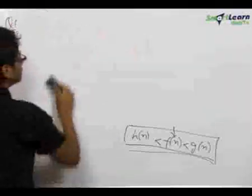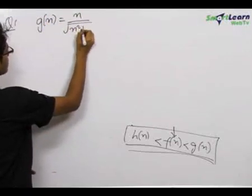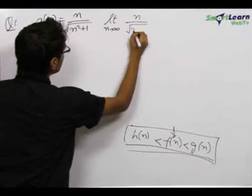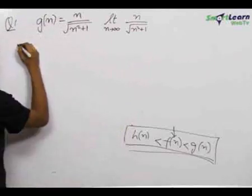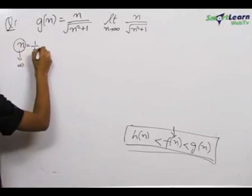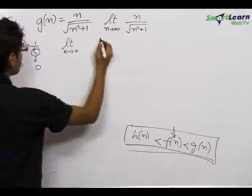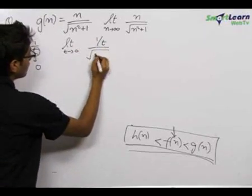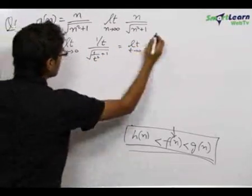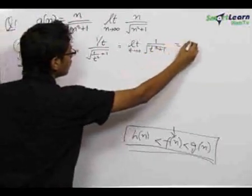g(n) equals n upon under root n square plus 1. To find the limit as n tends to infinity, we substitute n equals 1 upon t, so n tending to infinity means t tending to 0. This becomes limit t tending to 0 of 1 upon under root t square plus 1, which equals 1.